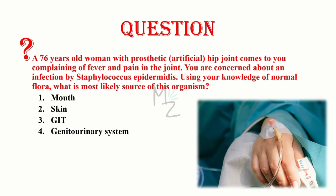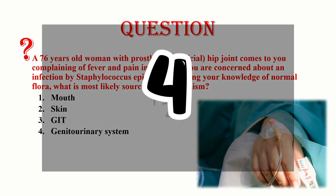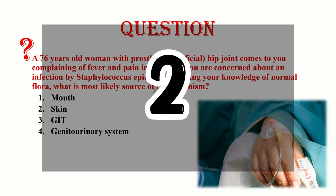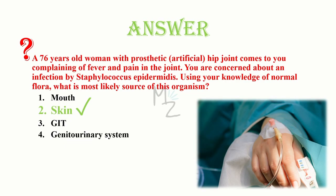Before reviewing the lecture, here is a question. A 76-year-old woman with a prosthetic artificial hip joint comes to you complaining of fever and pain in the joint. You are concerned about an infection by Staphylococcus epidermidis. Using your knowledge of normal flora, what is the most likely source of this organism? Mouth, skin, GIT (the gastrointestinal tract), or genitourinary system? The answer is skin.